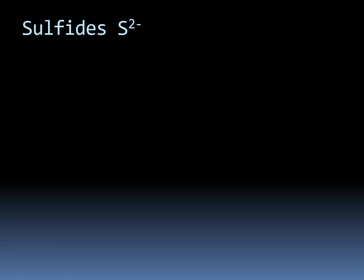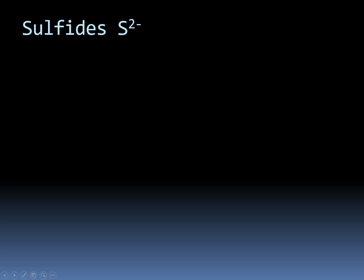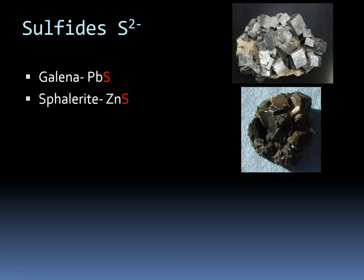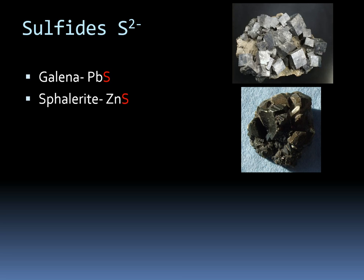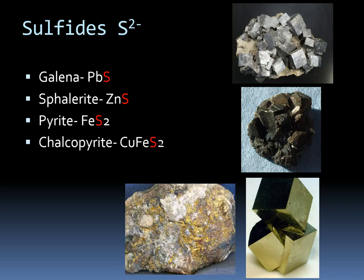Sulfides are characterized by a metal cation bonded to a sulfur anion. Galena is a lead sulfide, which means it's really heavy. Sphalerite is a zinc sulfide — it actually gives up the sulfur fairly easily, so it can be pretty stinky. Pyrite, or fool's gold, is an iron sulfide. Chalcopyrite is a copper-iron sulfide and is actually mined as a copper ore sometimes.